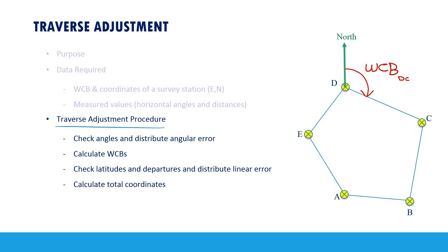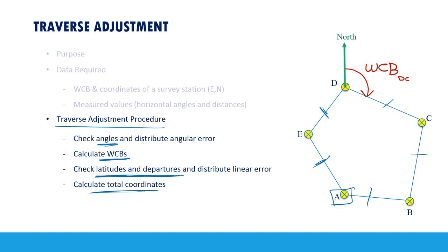I will now give you some background on the traverse adjustment procedure, and in a separate video I will do a complete example from A to Z. The main stages are: first, check the angles and distribute the angular error; then calculate the whole circle bearings; after that, check the distances in terms of latitudes and departures; and finally, calculate the final total coordinates of each station.